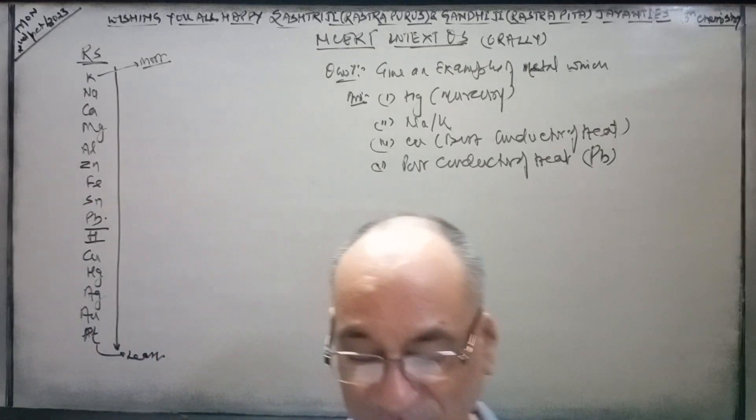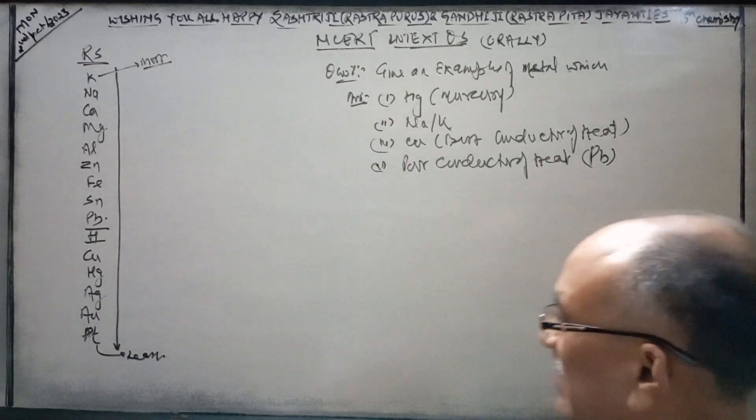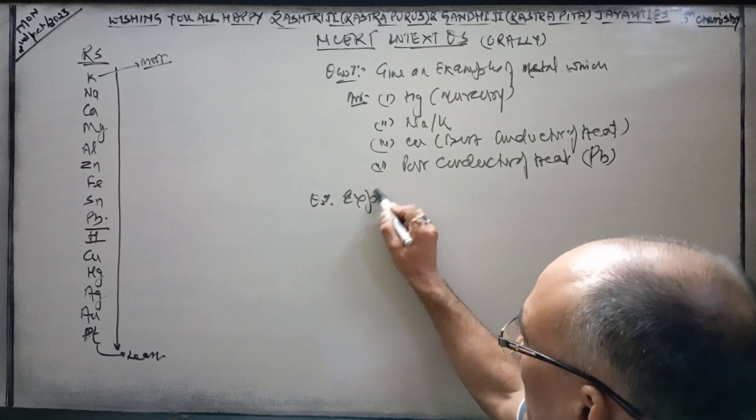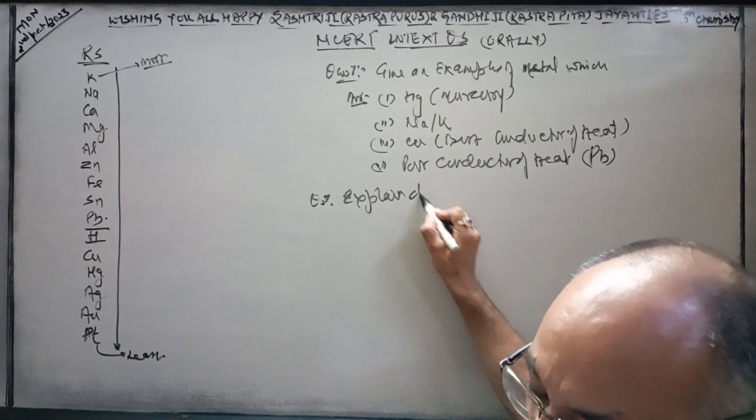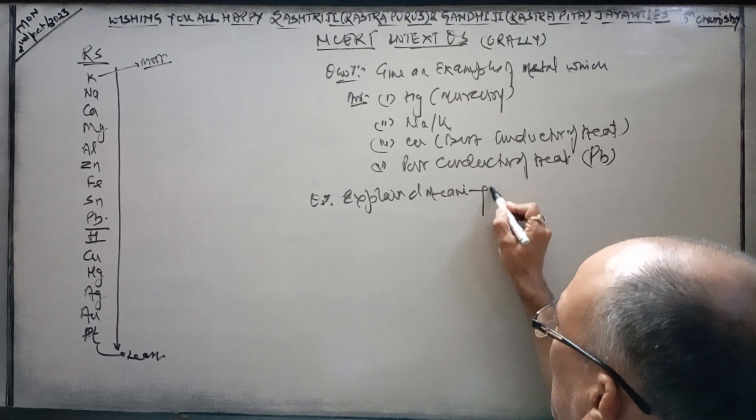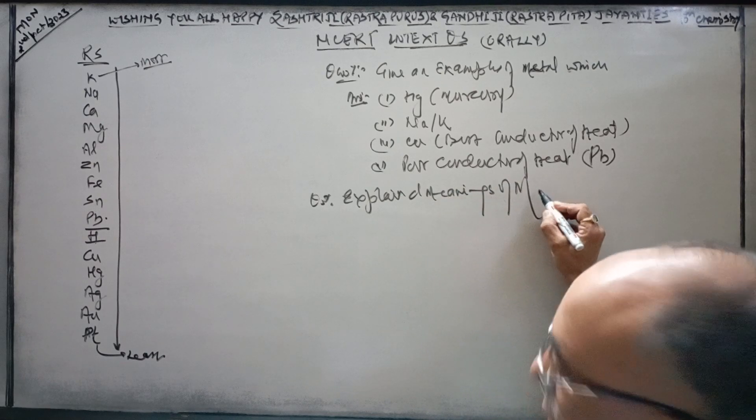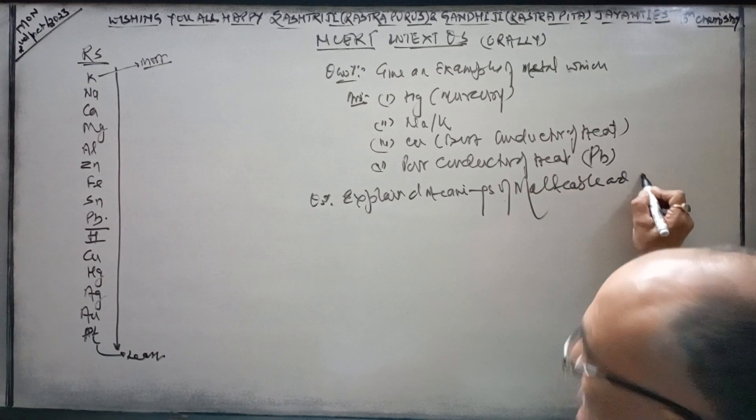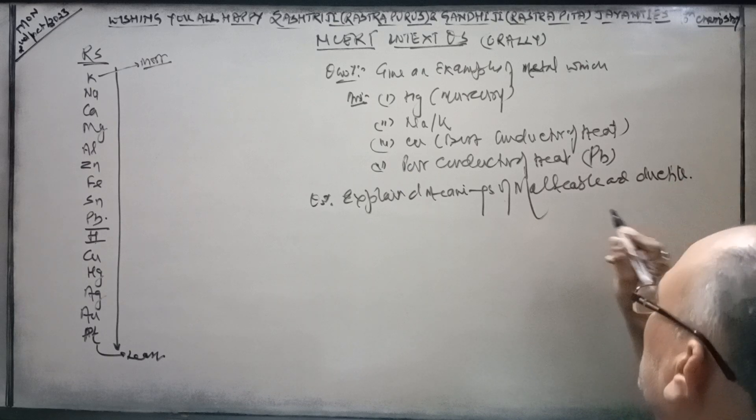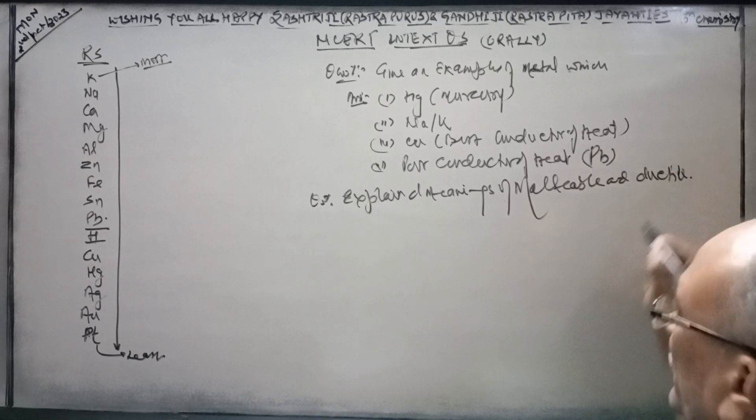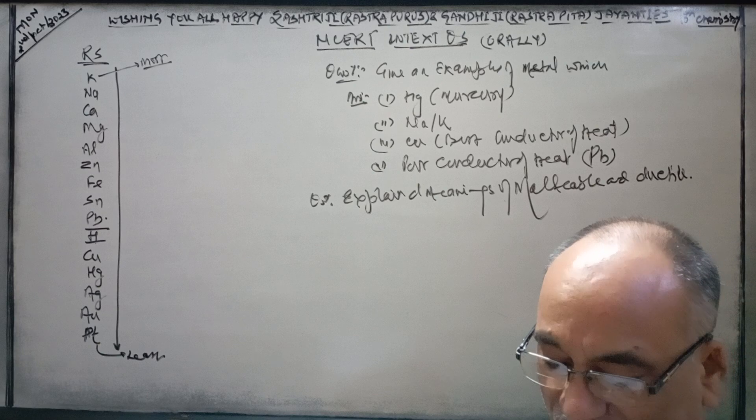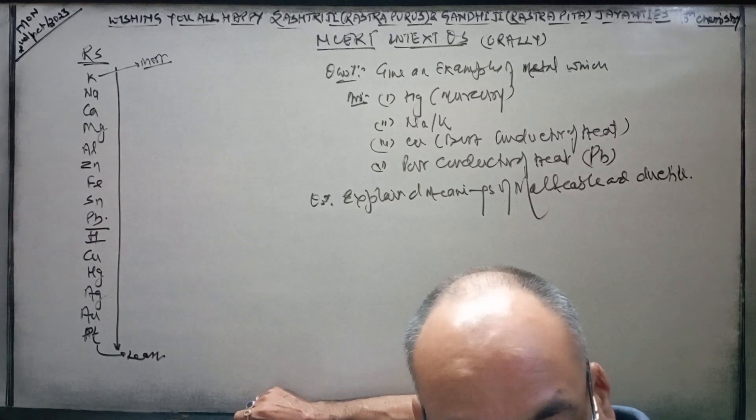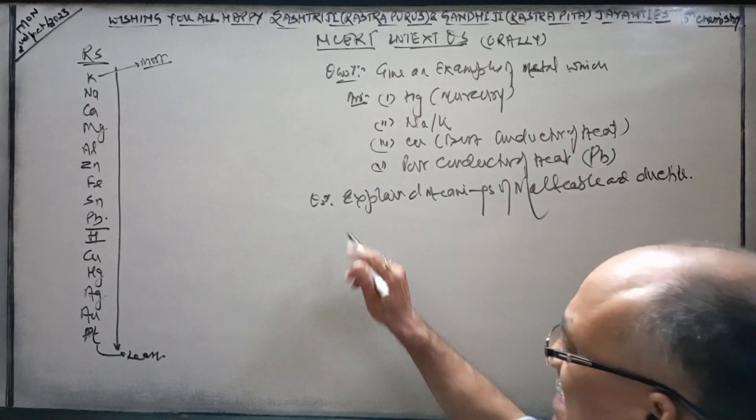Chemical reactivity is decreasing from potassium, the most reactive element, to gold, the least reactive element. Lead is a poor conductor of heat.